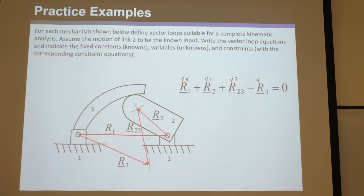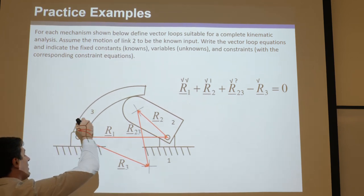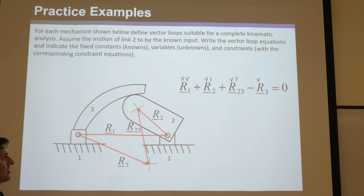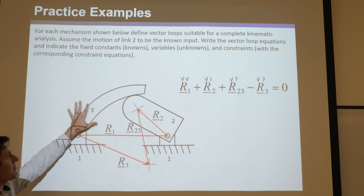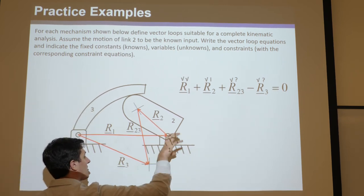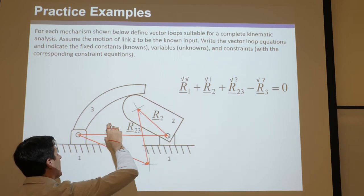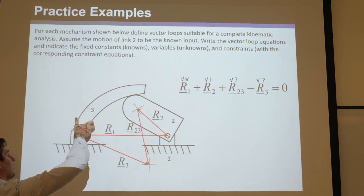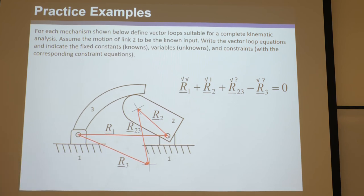Do we care about the angle of R3? Yes, very much. If this were a real mechanism, the input would be stuck on here; we'd define theta two, then attach some output here, and the output would be theta three — that's what we care about. So we've drawn a nice vector loop with two equations and two unknowns, and the thing we're solving for is actually something we care about — how theta three changes.